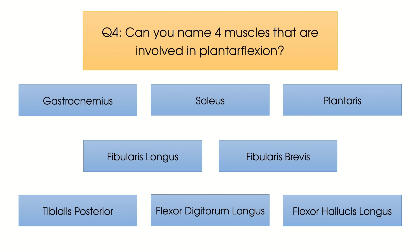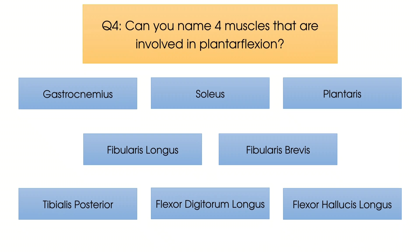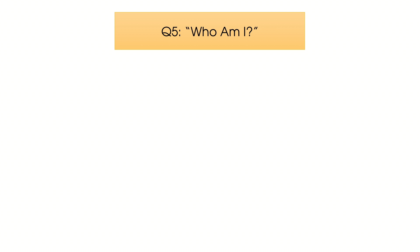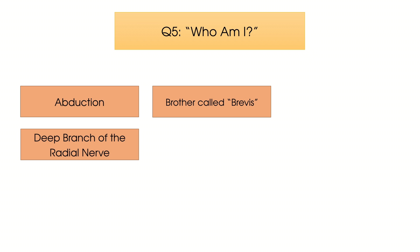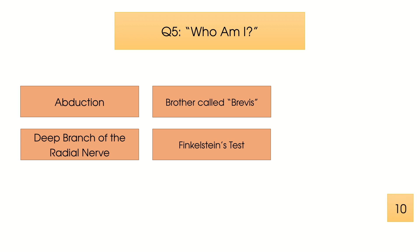And finally is question number five. Can you work out which muscle we are talking about here? My primary role is in abduction. I have a little brother called brevis. A clue as to this muscle's location: I am switched on by the deep branch of the radial nerve. And finally, you can use Finkelstein's test to check on how my tendon is doing. So who am I?